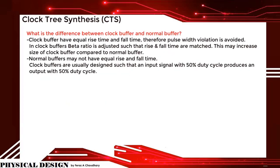What is the difference between a clock buffer and a normal buffer? Clock buffers have equal rise time and fall time; therefore, pulse width violation is avoided. In a clock buffer, the beta ratio is adjusted such that rise and fall times are matched. This may increase the size of the clock buffer compared to a normal buffer. Normal buffers may not have equal rise and fall time. Clock buffers are usually designed such that an input signal with 50% duty cycle produces an output with 50% duty cycle.